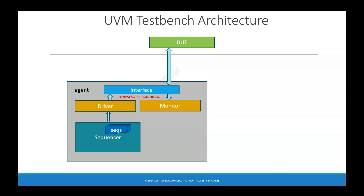For example, if your design has multiple communication protocols — say you support USB 2.0 and USB 3.0 — you will have two different agents: one for USB 2.0 and one for USB 3.0. Each of those agents will have their own interface, their own driver, their own monitor, their own sequencer, and their own sequences. For simplicity, the example here uses just one agent, but it is possible depending on your design that you will have multiple agents.